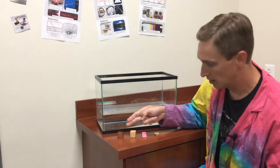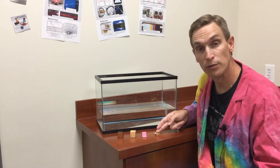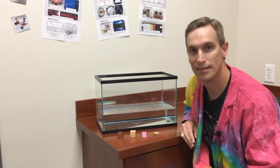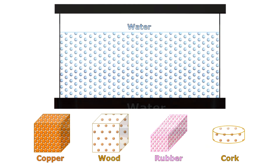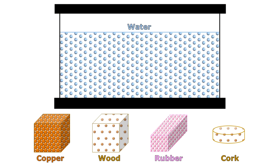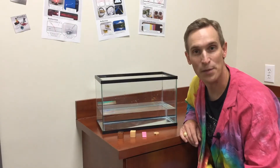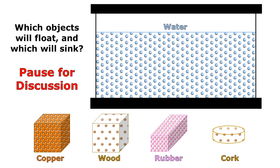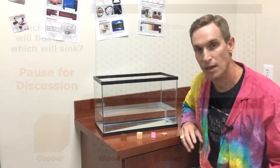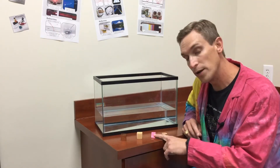Whether a material floats or sinks depends on its density. Here I have our copper block, our wood block, a rubber eraser, and a piece of cork. I also have an aquarium full of water. Water is a form of matter, so it's made of particles too. Based on our model of density, which substances do you think will float in water and which will sink? Take a minute and discuss that with your classmates, and I'll be back to talk about the answer.